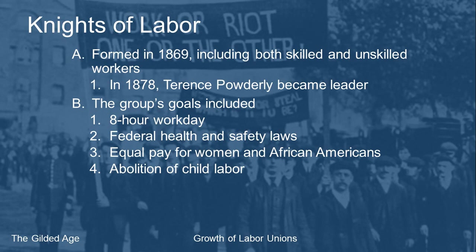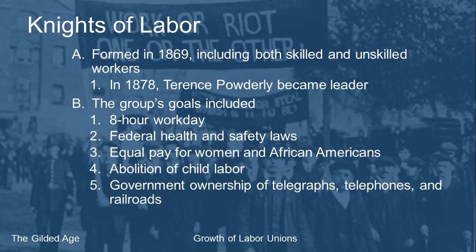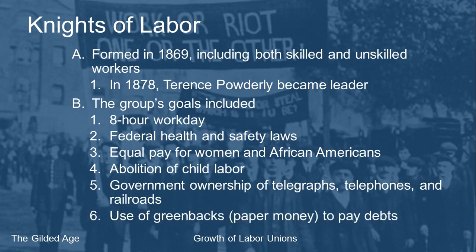The Knights also wanted the government to abolish child labor — not purely out of magnanimity, but also because businesses hired children for menial work rather than paying a full-grown adult. Getting rid of child labor would force employers to hire more adults. They also wanted the government to take ownership — not just regulate — some of the big utilities: telegraphs, telephones, and railroads. They believed government ownership would mean workers were treated fairly.